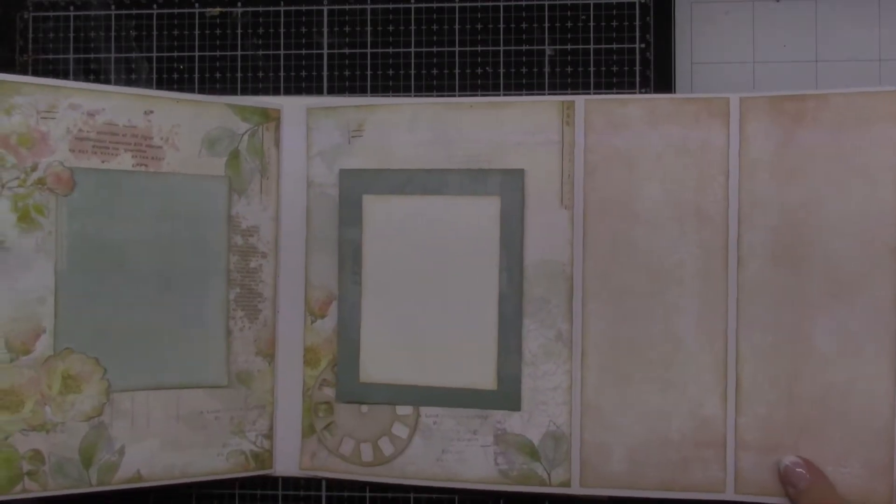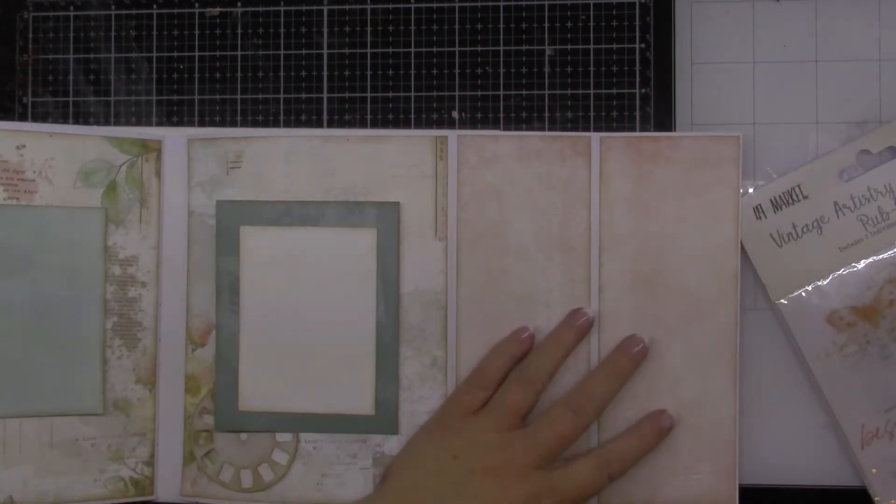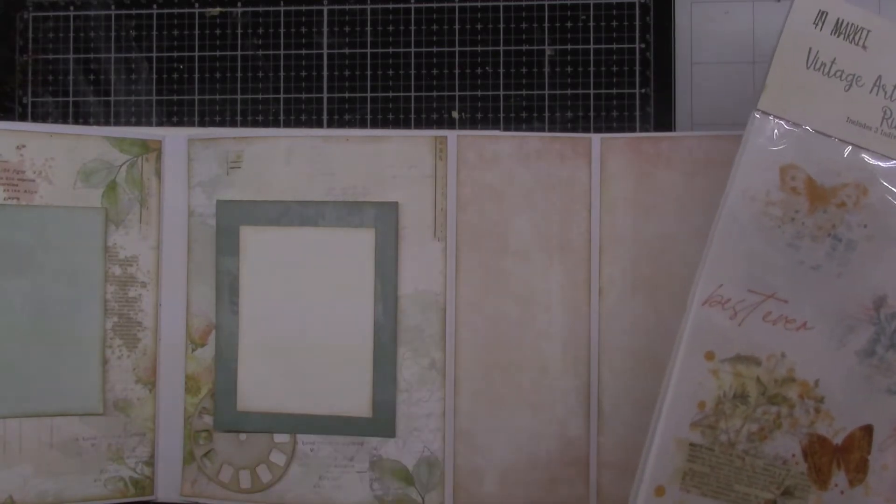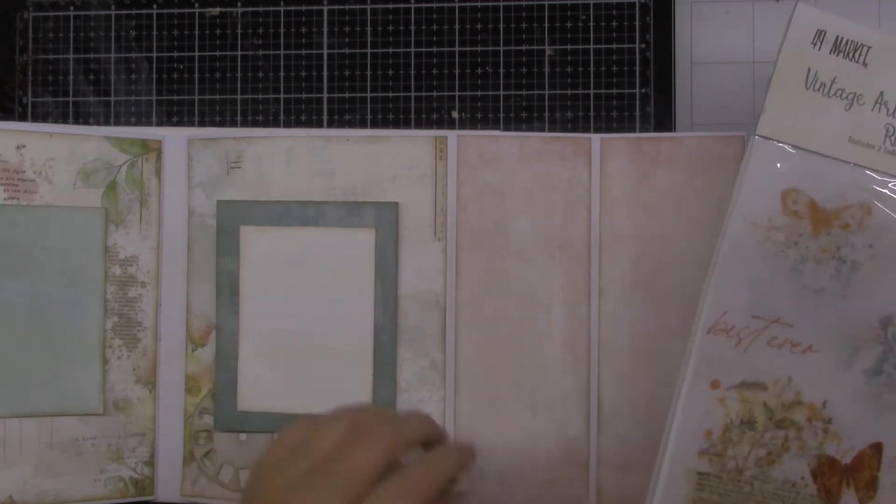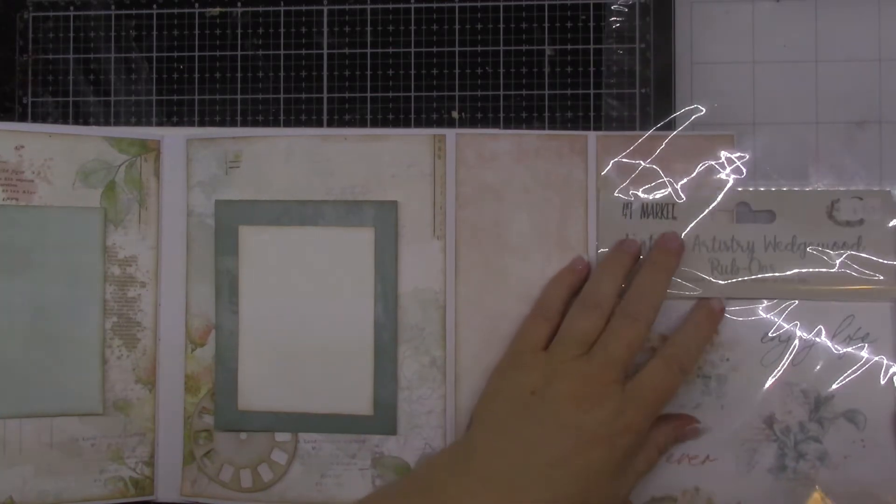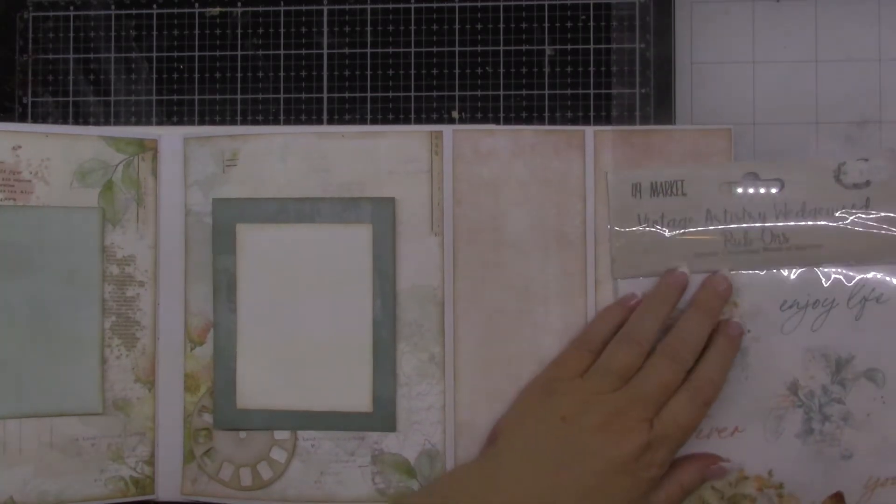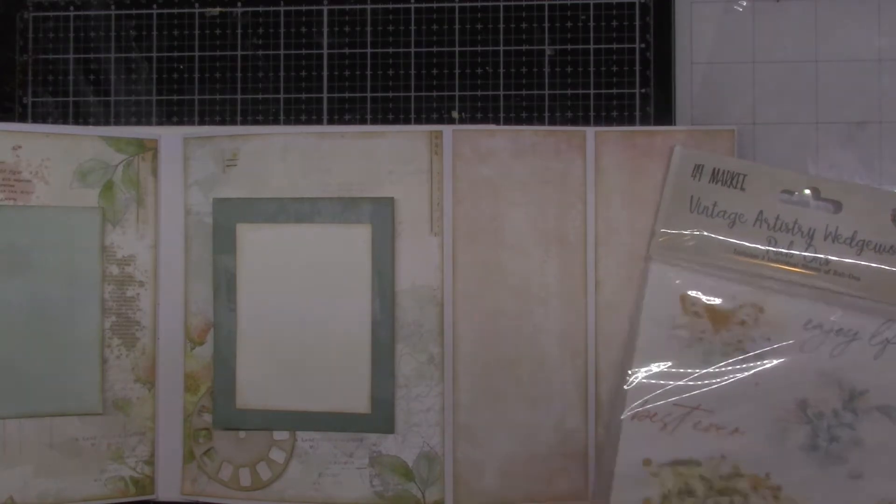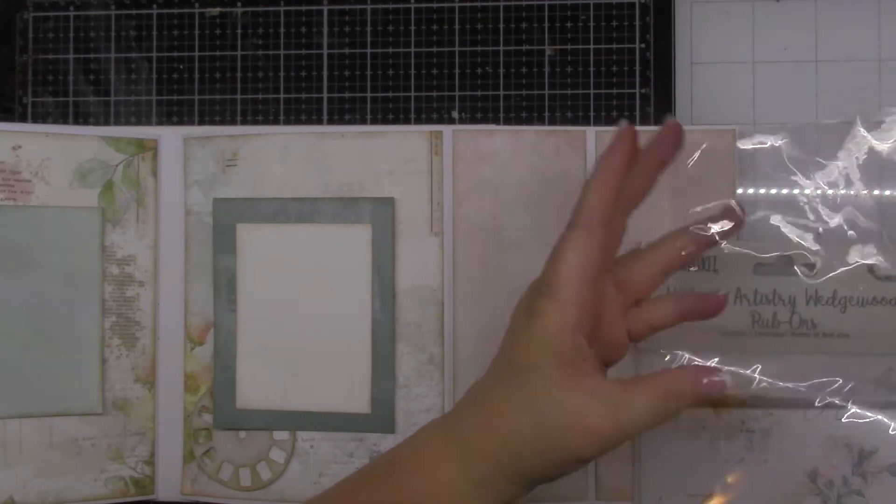I have on this inside page here where it's quite plain and I want to start with adding just a little bit of design. I want to leave some space here to do some journaling to go with my photos, but I will add on some rub-ons to add some color to that.